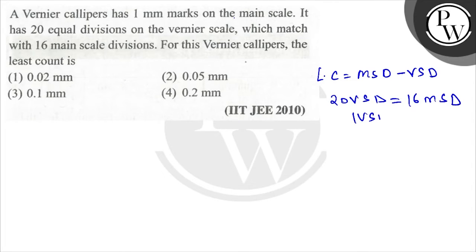So 1 VSD is equal to 16 upon 20 MSD. So least count is equal to MSD minus 16 by 20 MSD.